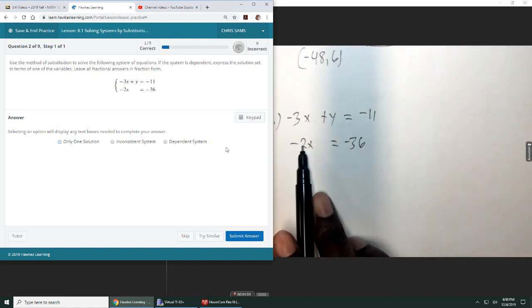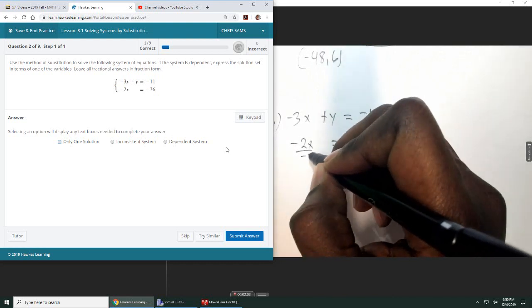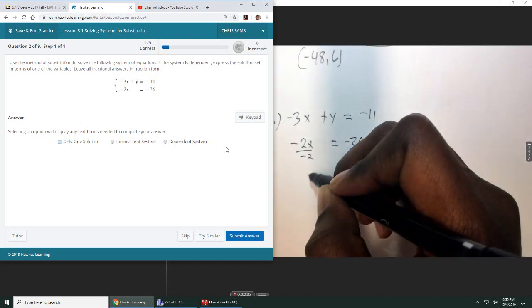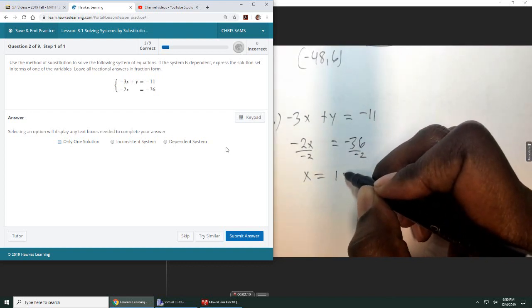Okay, so we're going to solve this one for x since that's the only variable we have. So we'll divide by negative 2 on both sides of the equal sign, and we get that x equals positive 18.